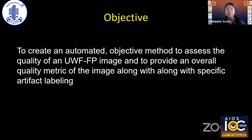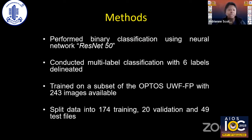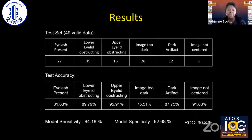We thought about how to give the photographer real-time feedback on whether the ultra-wide field image is good enough to detect sickle retinopathy. We worked with the computer science team to create an automated objective method to assess image quality, giving labeling of artifact type. A neural network was trained for multi-label classification with six labels — trained on 243 Optos ultra-wide field fundus images. The ground truth was established by my review: eyelash present, lower lid obstructing, upper eyelid obstructing, image too dark, dark artifact, and non-centered image.